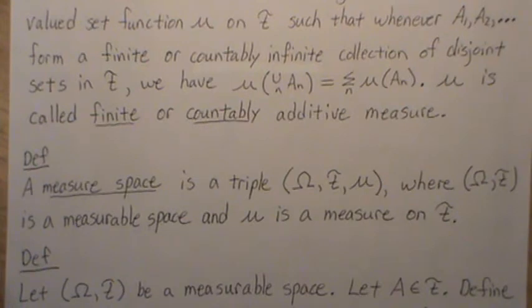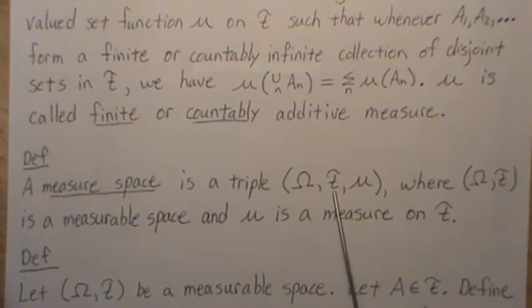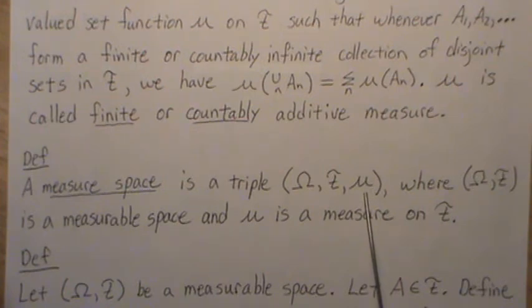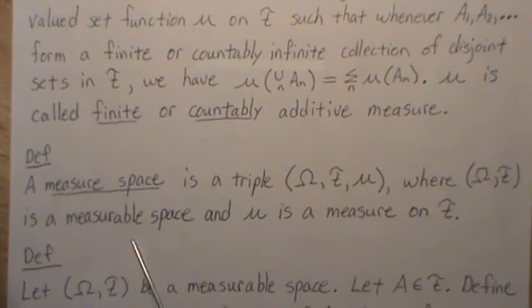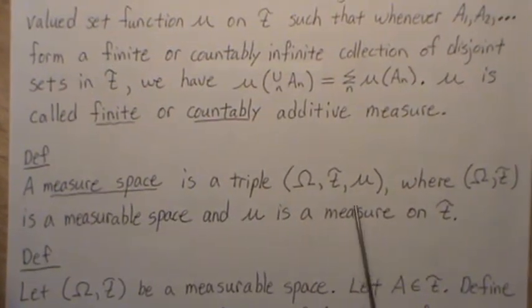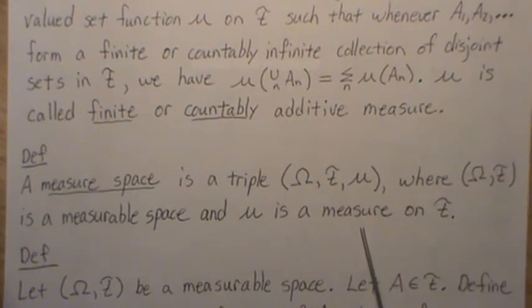Now, a measure space is a triple (Ω, F, μ), where (Ω, F) is a measurable space and μ is a measure on the sigma field F. Remember, a measure is a non-negative set function.